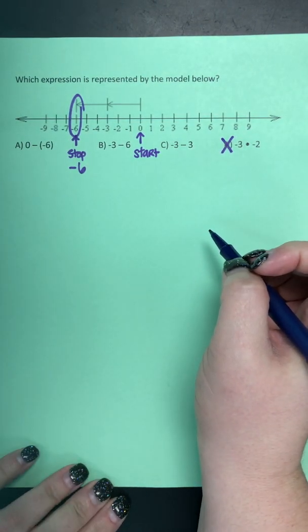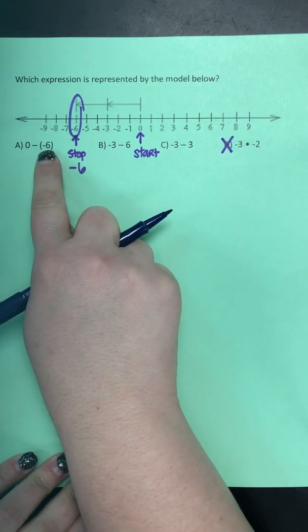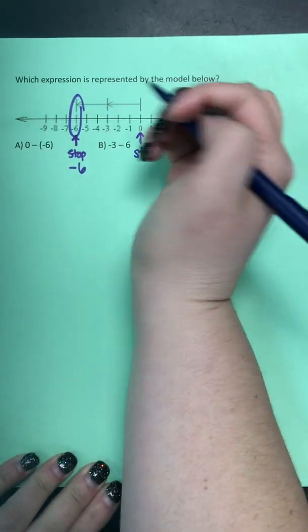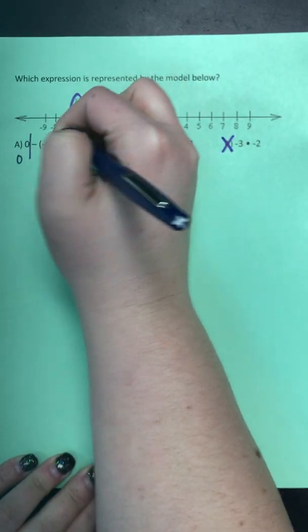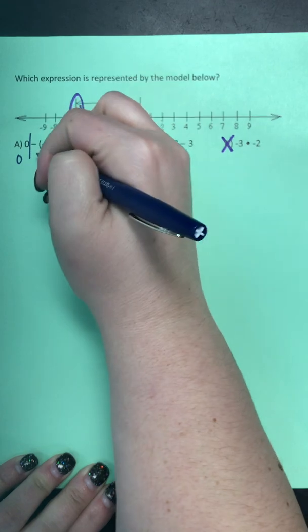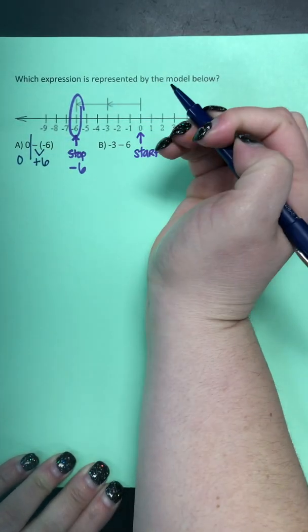Letter choice A says zero minus negative six. So I know that there's subtraction, and I know that there's a negative, so I'm going to use my integer song. So I start by drawing my line, rewriting my numbers. On this side of the line, I have both a subtraction and a negative, and we know those combine to make a positive.